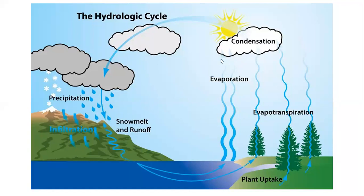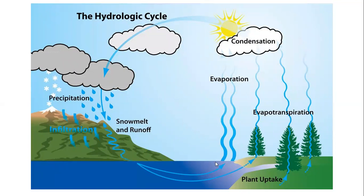Whatever this evaporation, condensation, and precipitation cycle — it continues throughout the year. The formation of the monsoon is a continuous process. Whatever evaporation occurs is the main cause of precipitation. So this is about the hydrologic cycle: water evaporates from the top surface — a phase change from liquid to vapor — moves upward, condenses, and falls again as precipitation.